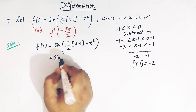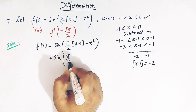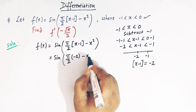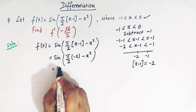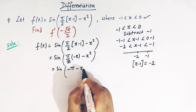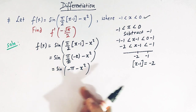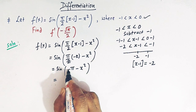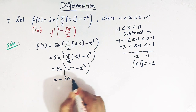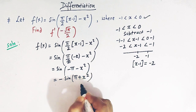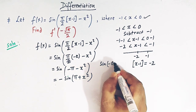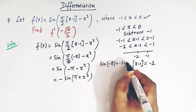Now f of x can be redefined. We substitute greatest integer of x minus 1 as minus 2, giving sin of pi by 2 times minus 2, minus x squared. The 2s cancel, leaving sin of minus pi minus x squared. We take the negative sign outside using sin of minus theta equals minus sin theta, giving minus sin of pi plus x squared.